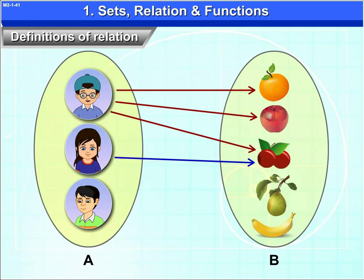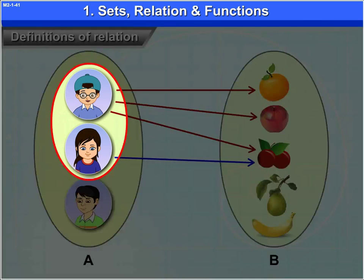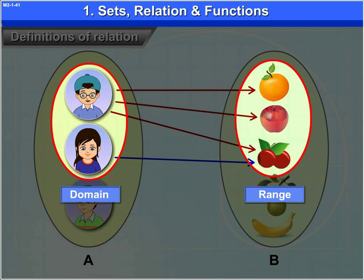The set of all elements of A which are related to the elements of B is called the domain of relation. And the set of all the elements of B to which the elements of A are related is called the range of relation.